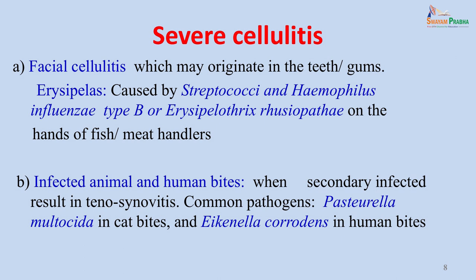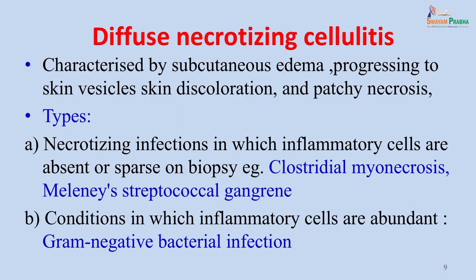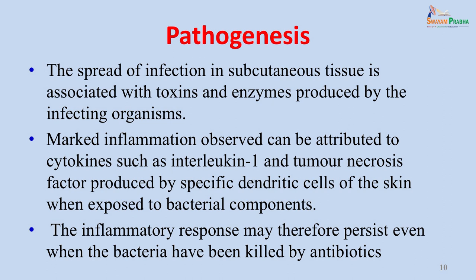Infected animal and human bites of the hands are associated with severe cellulitis causing tenosynovitis. Common pathogens are Pasteurella multocida in cat bites and Eikenella corrodens and other anaerobes in human bites. Diffuse necrotizing cellulitis is characterized by subcutaneous edema progressing to skin vesicles, skin discoloration and patchy necrosis. There are two types: necrotizing infections where inflammatory cells are absent or sparse, commonly seen with clostridial myonecrosis or gas gangrene; and conditions where inflammatory cells are abundant, associated with gram-negative bacteria such as E. coli, Klebsiella and Pseudomonas.